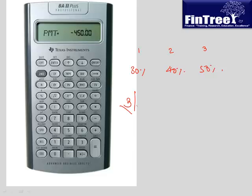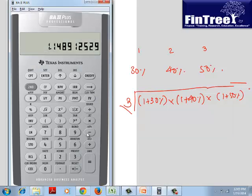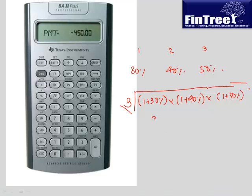Cube root of (1 + 30%) × (1 + 40%) × (1 + 50%) = cube root of 1.3 × 1.4 × 1.5. Calculate this to get the geometric mean — the actual average return per year.